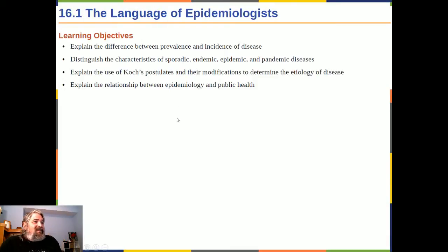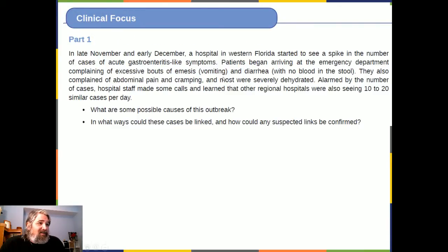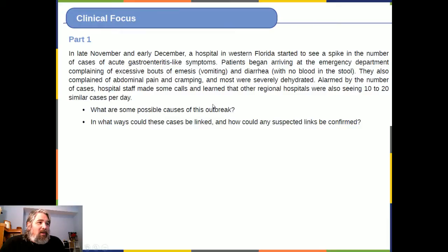Learning objectives for Chapter 16: Explain the difference between prevalence and incidence of disease. Distinguish the characteristics of sporadic, epidemic, endemic, and pandemic diseases. Explain the use of Koch's postulates and their modifications to determine the etiology of disease. Explain the relationship between epidemiology and public health. Clinical focus: Late November to early December, a hospital in western Florida saw a spike in acute gastroenteritis-like symptoms. Patients arrived at the emergency department complaining of excessive vomiting and diarrhea without blood, plus abdominal pain, cramping, and severe dehydration. Other regional hospitals were also seeing 10–20 similar cases per day.